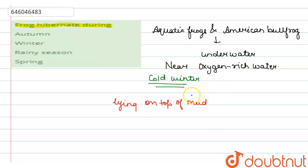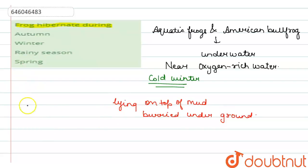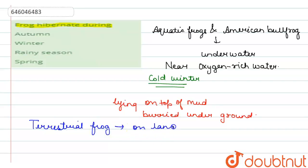Frogs either lie on top of the mud or get partially buried underground. Terrestrial frogs hibernate on land. As the word suggests, terrestrial frogs hibernate on land, and frogs that are good diggers burrow into the soil.